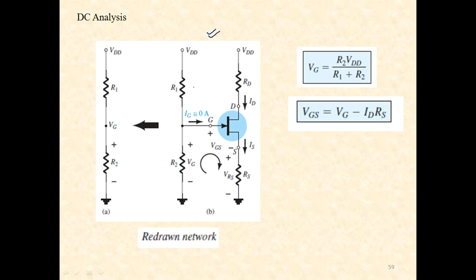For DC analysis of voltage divider bias, we find the voltage at the gate node VG using the voltage divider expression: VG equals R2/(R1 plus R2) multiplied by VDD. Once VG is found, apply KVL to the input loop.